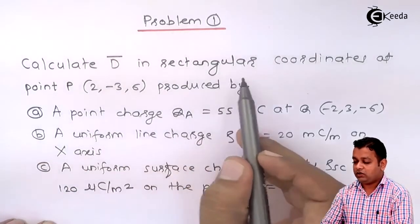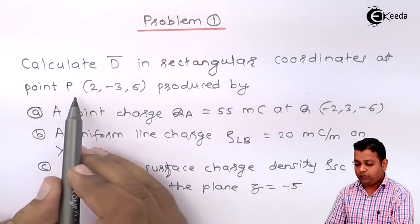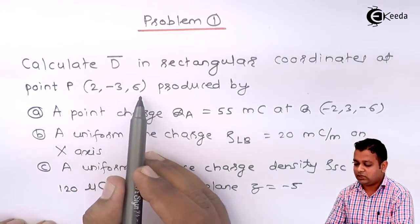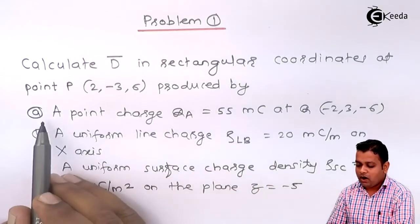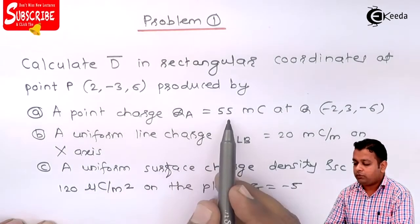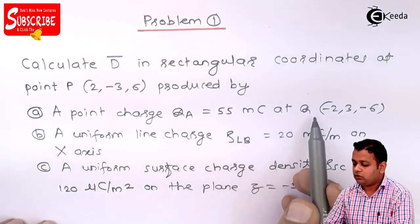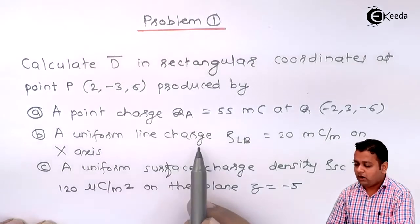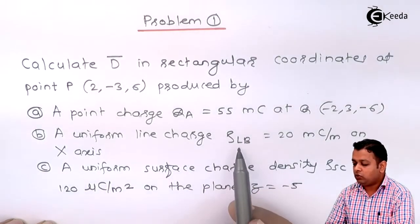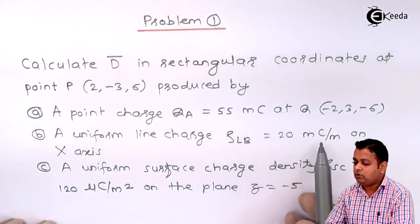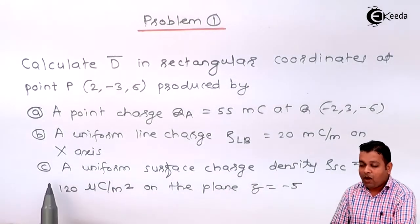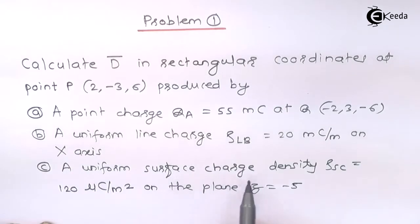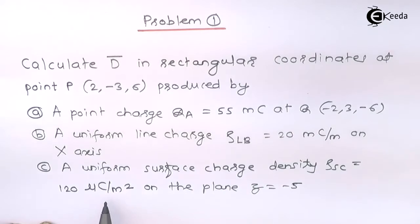Calculate D bar in rectangular coordinates at point P (2, -3, 6), produced by: Part A, a point charge QA of 55 millicoulombs at Q(-2, 3, -6); Part B, a uniform line charge with line charge density rho_Lb of 20 millicoulombs per meter on the x-axis; and Part C, a uniform surface charge density rho_SC of 120 microcoulombs per meter square on the plane z = -5.